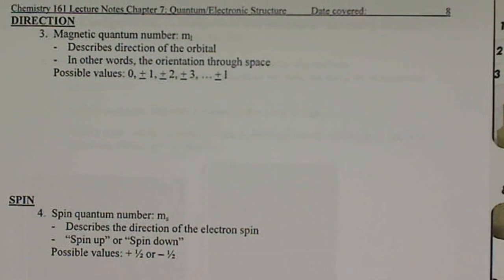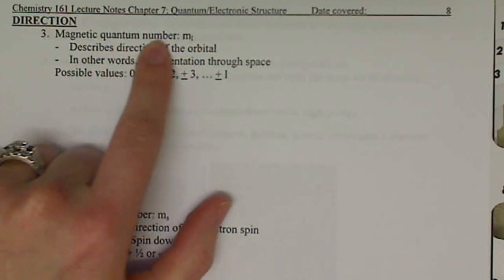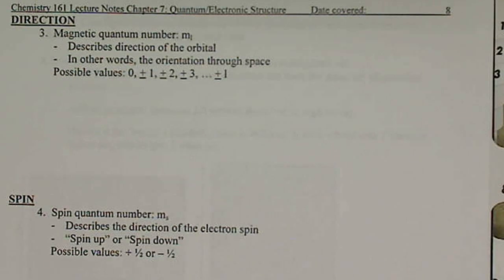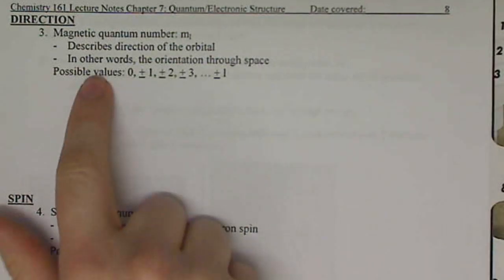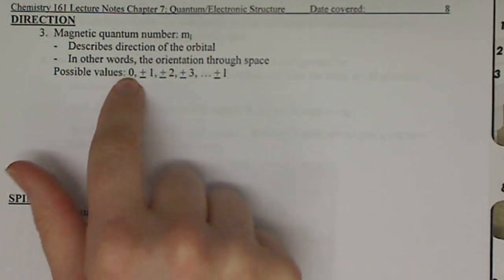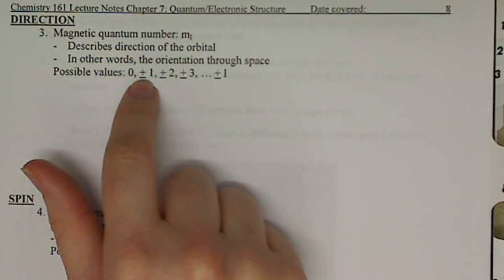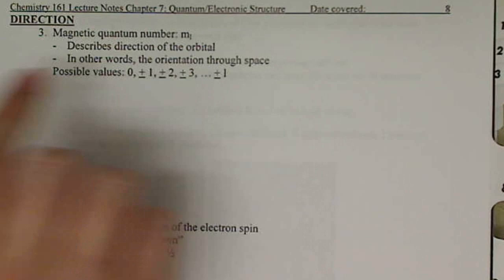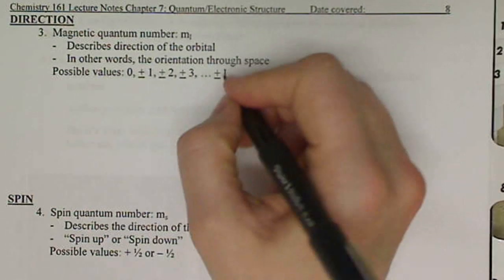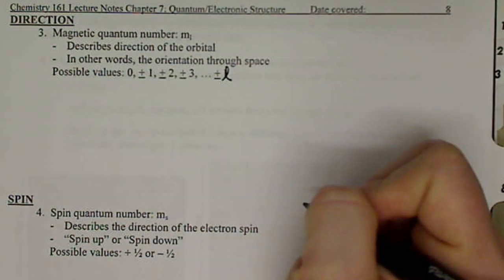The magnetic quantum number, m sub l, describes the direction of the orbital. How are the orbitals oriented through space? How can we rotate them? The possible values are integers again, except that they can be negative. So we have zero, plus or minus one, plus or minus two, depending on what l is.